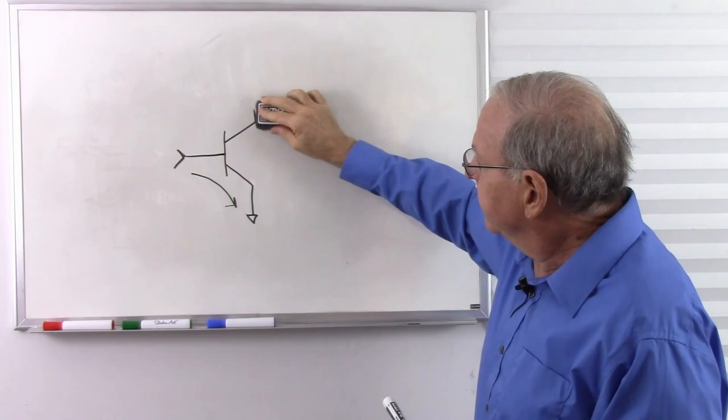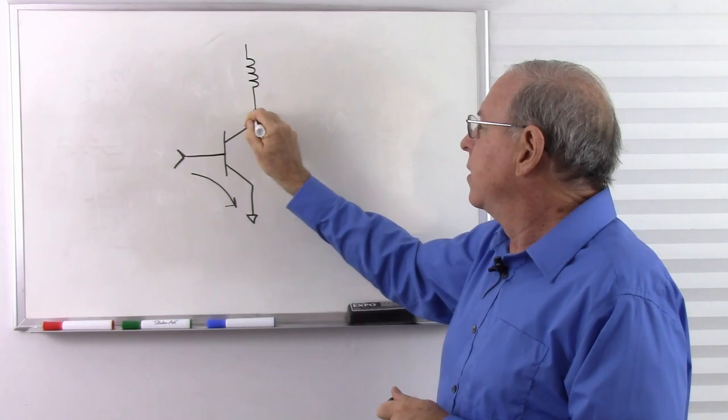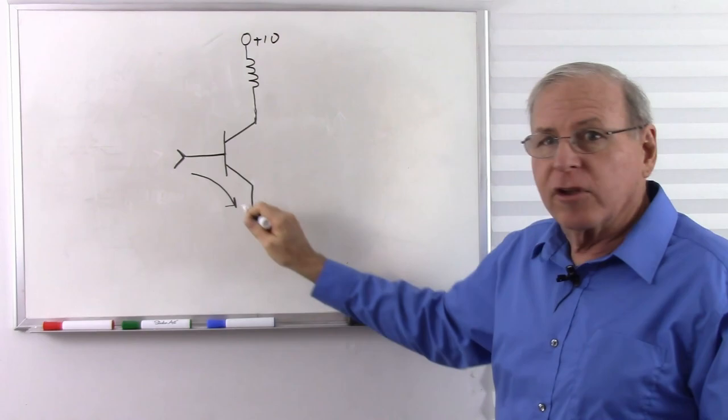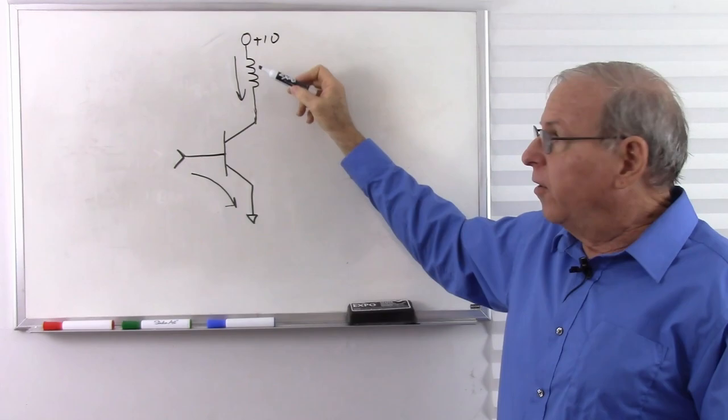But another thing you can do with a common emitter circuit is to put another circuit in the collector. Such as the example we just used with the coil of the relay in the collector. Or this could be a primary of a transformer or any other kind of appropriate circuit.